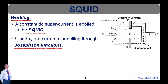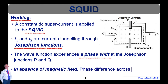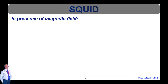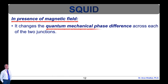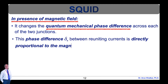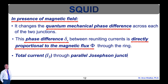In a superconductor, a single wave function describes all the Cooper pairs. The wave function experiences a phase shift at the Josephson junctions P and Q. In absence of magnetic field, the phase difference across P and Q is 0. When a magnetic field is applied, it changes the quantum mechanical phase difference across each of the two junctions. This phase difference between reuniting currents, Δ₀, is directly proportional to the magnetic flux φ through the ring. The voltage across the Josephson junction oscillates with changes in phase at the two junctions. By noting down the voltage across the junction, the change in flux and corresponding magnetic field can be measured.